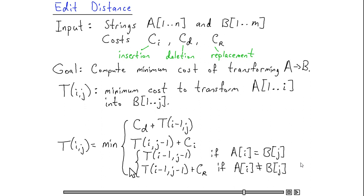And so by taking the minimum over these four alternatives, we're going to find the best way of transforming the first i characters of A into the first j characters of B.